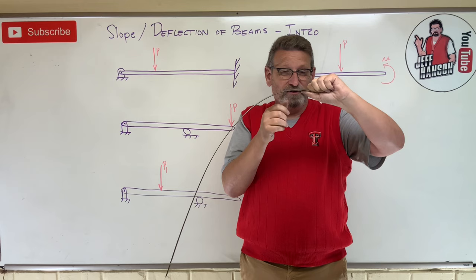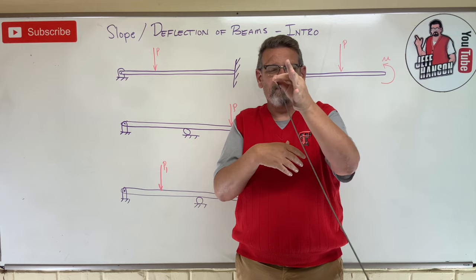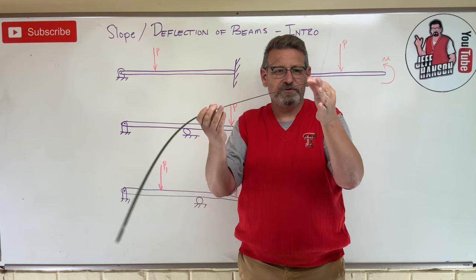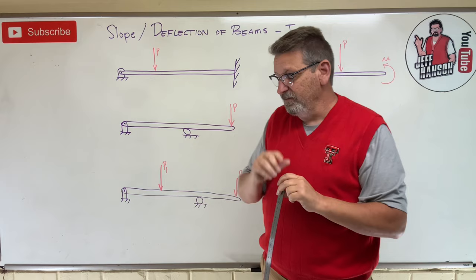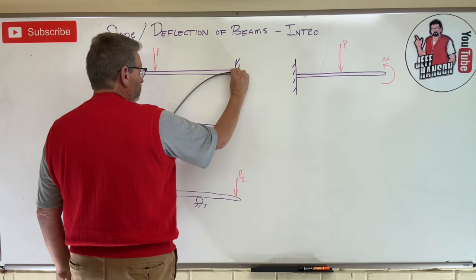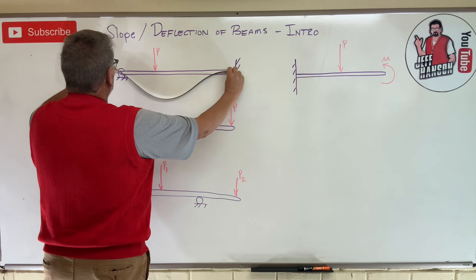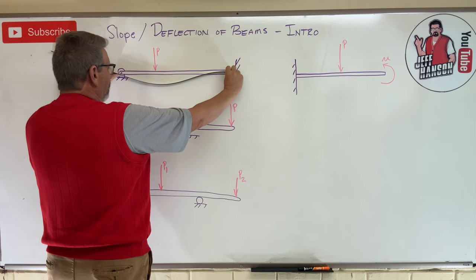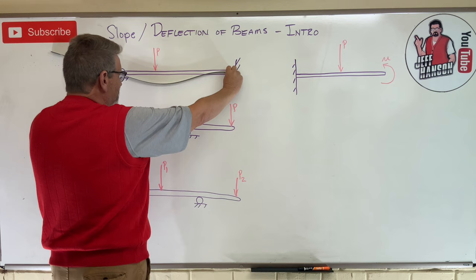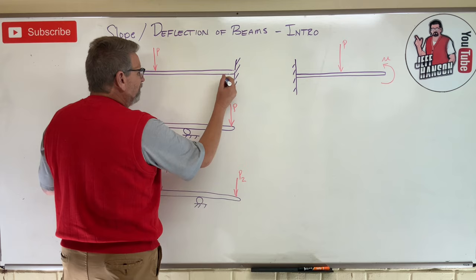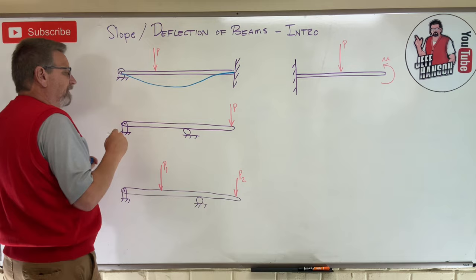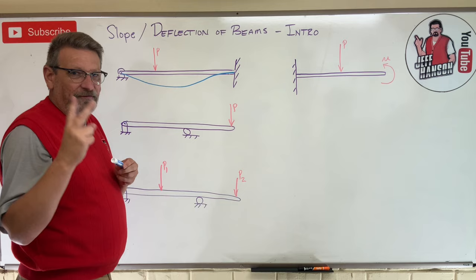Even deflecting under its own weight, look at what happens right at the wall: the beam is flat. There's zero deflection at the wall and then it starts to slope. If the wall were a pin connection it wouldn't make a good support — it'd swivel. But with a fixed connection it's going to be flat there. So we have a fixed connection at the wall on one side and a pin connection on the other, and the deflected beam comes off the wall, deflects, and comes back up.